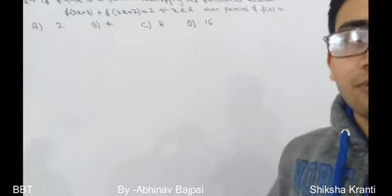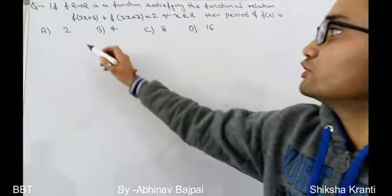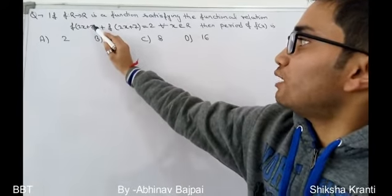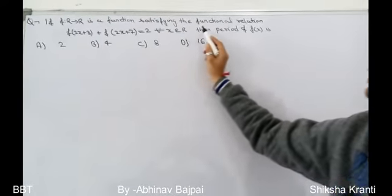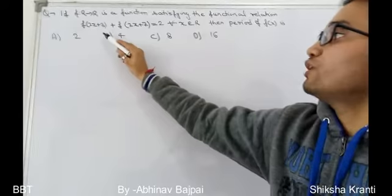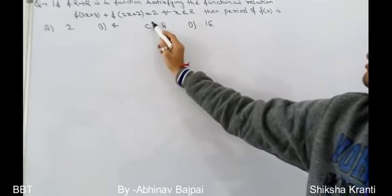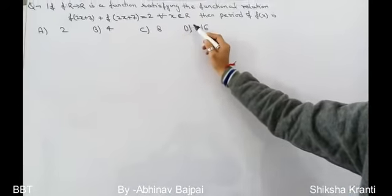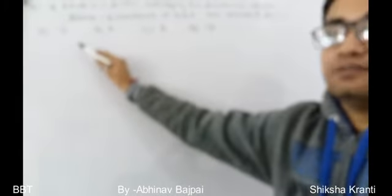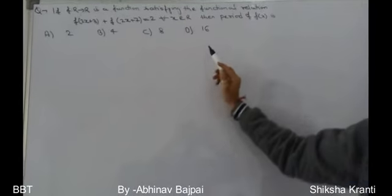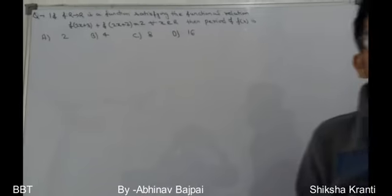The next problem is from the functions chapter. If f is a function defined from ℝ to ℝ satisfying f(2x + 3) + f(2x + 7) = 2 for all x ∈ ℝ, then the period of f(x) is — options: 2, 4, 8, or 16. Periodic functions are those that repeat themselves in regular intervals.